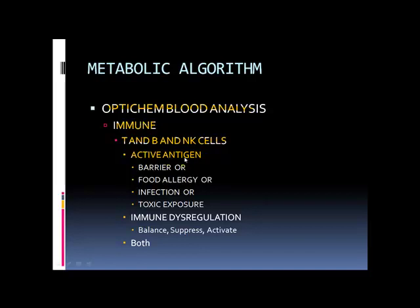If that number is below 1.5, it could be normal, or you have immune dysregulation if some of the T and B natural killer cells are off. But if there is an active antigen, we have to look at your barrier system.